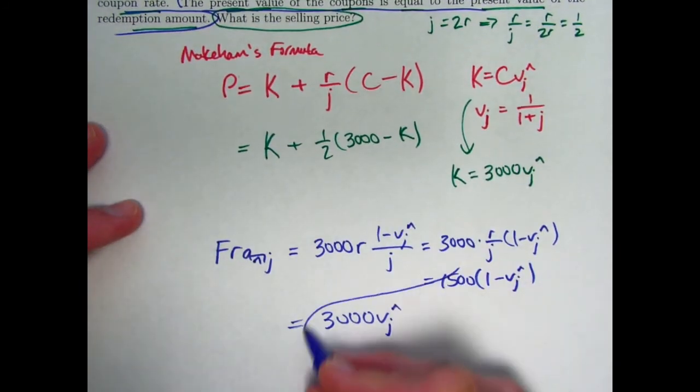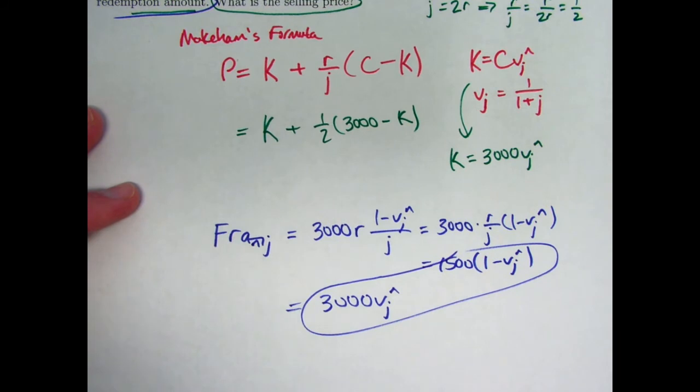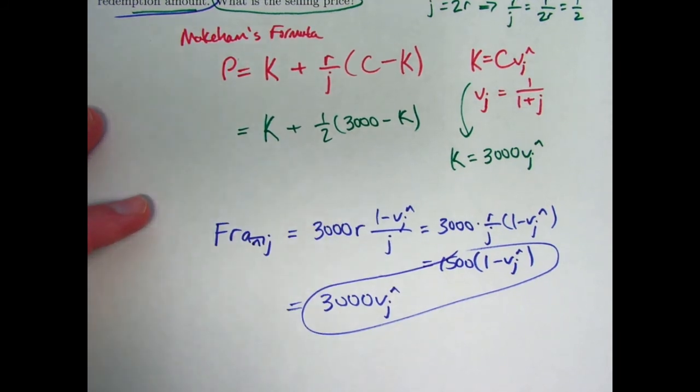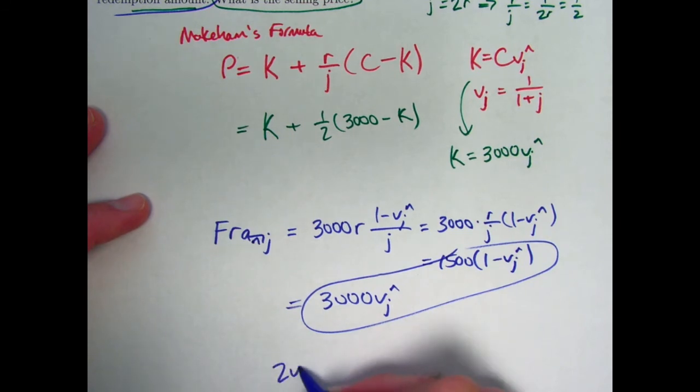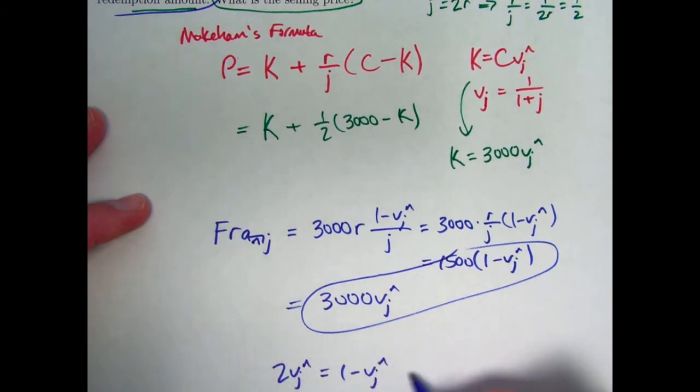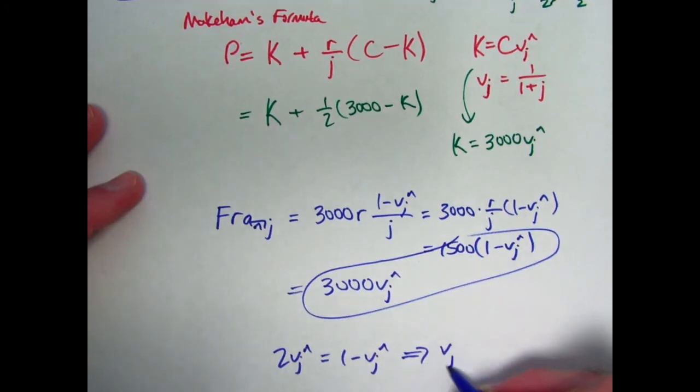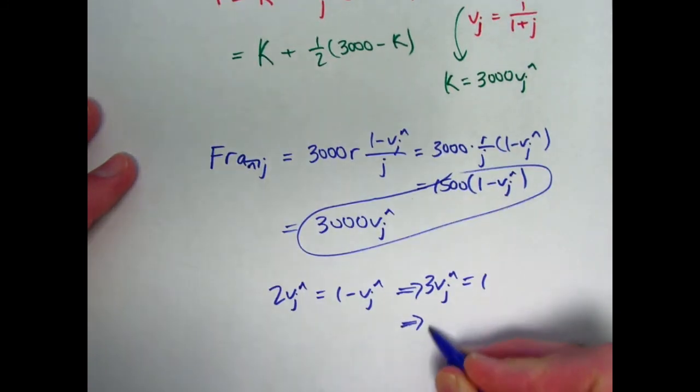These two things have to equal each other. We can solve that equation for V sub J to the N power. We can divide everything by 1,500 to get 2 V J to the N equals 1 minus V J to the N. Therefore, V J to the N, or three times it, would equal 1. So V J to the N would be 1 third.